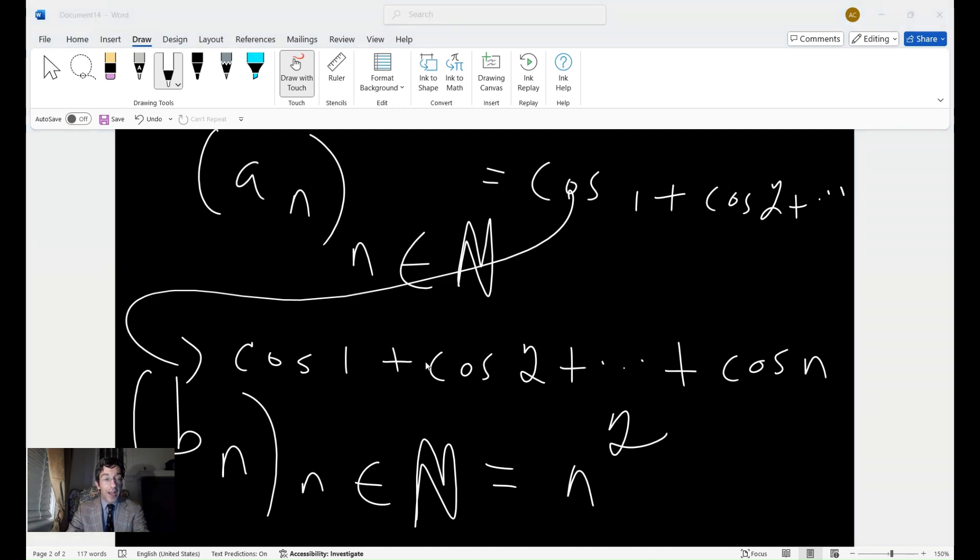Now, we have to find, now that we have the limit here, the theorem, we have to find a sub n plus 1 minus a sub n divided by b sub n plus 1 minus b sub n. So that we can verify that all of the conditions, we can apply all of the conditions that are applicable to the theorem. So let's see if we can do that.